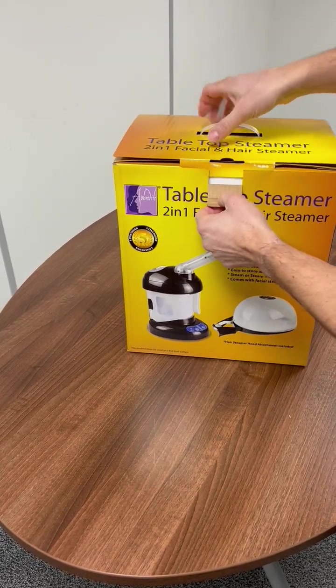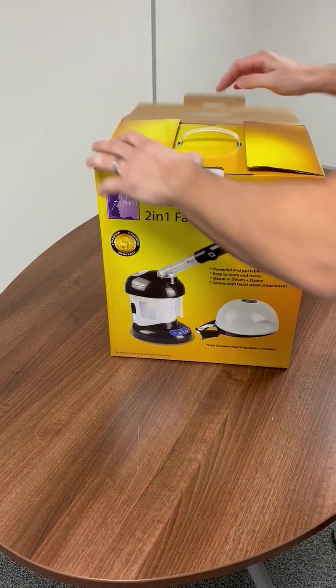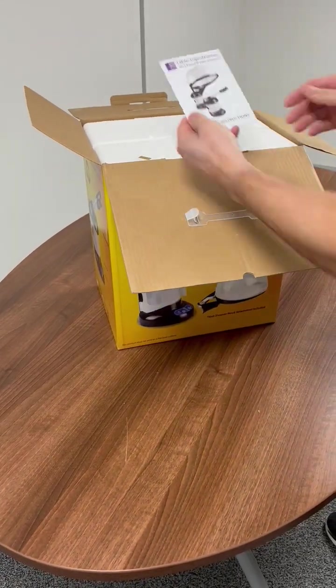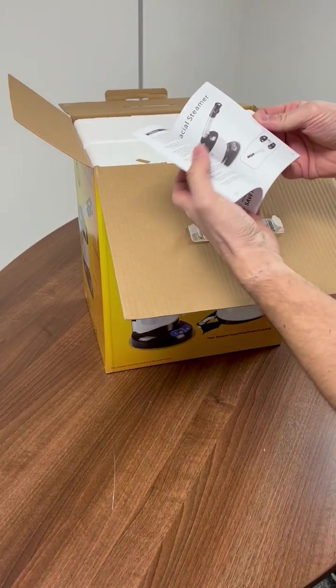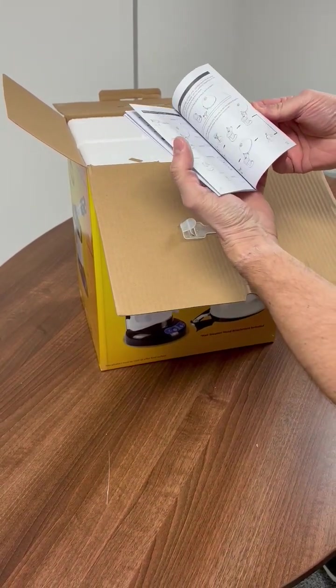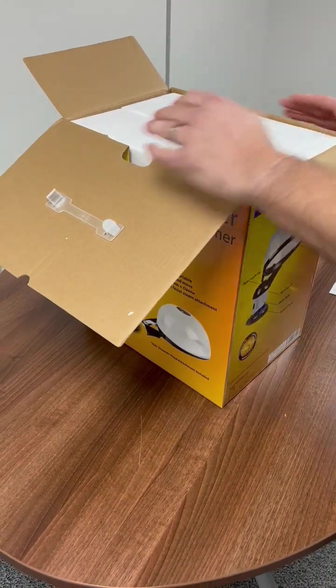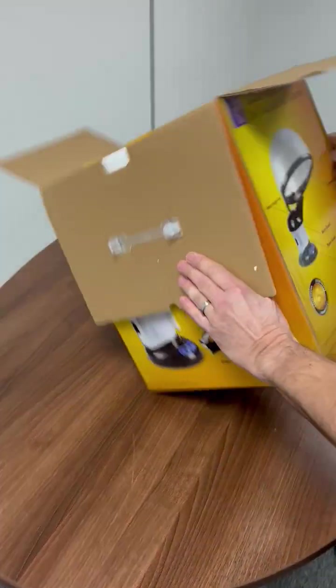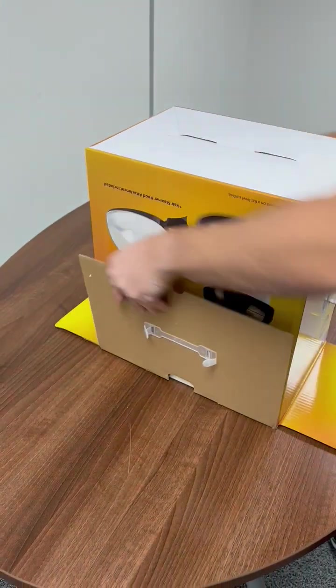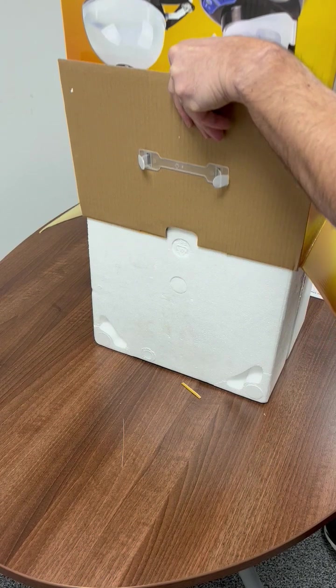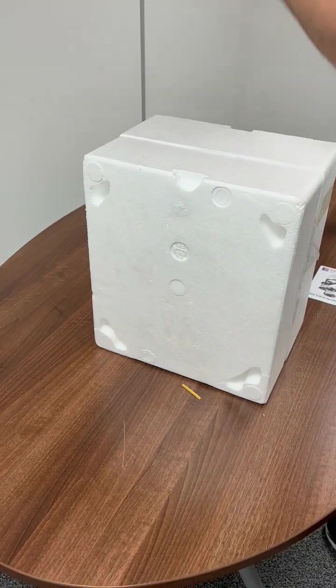Lift up the top cover and open it. You've got your instruction booklet that tells you exactly how to operate it and the best way to use it. The easiest way to get this out without damaging the box: flip it over and just gently lift it up.